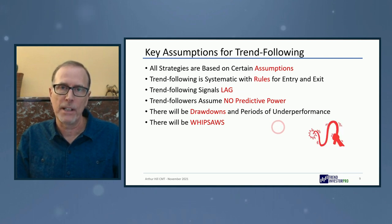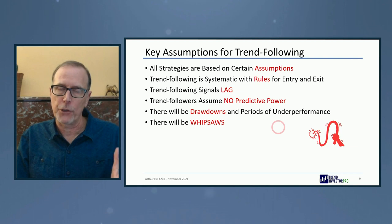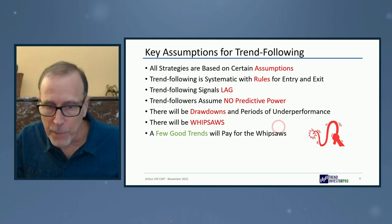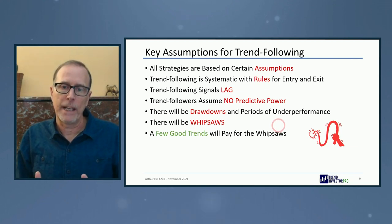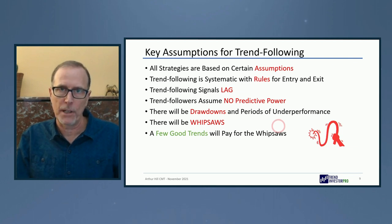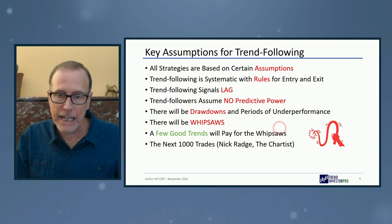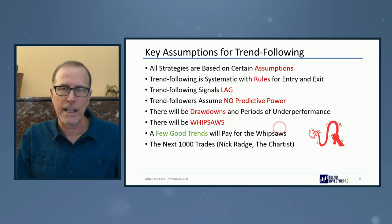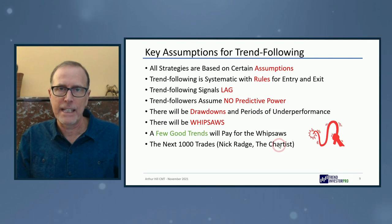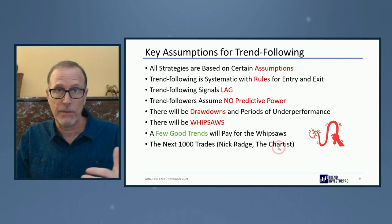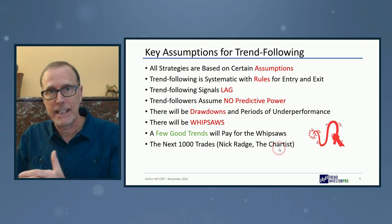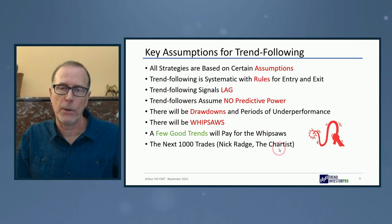There are going to be drawdowns and periods of underperformance — that's just the way the markets are. There are going to be whipsaws, and they're pretty much unavoidable. But the good news is a few good trends are going to pay for those whipsaws — at least that's the assumption. Nick Rah of The Chartist in Australia has a great site. He says think about the next 1,000 trades: you may have a string of 10, 20, even 30 losses on a bad run, but think about that trend following strategy over the next 1,000 trades.